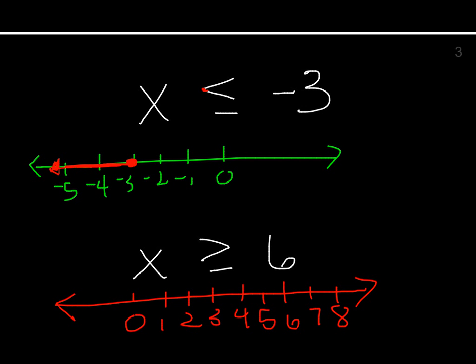We want to show greater than or equal to 6, so since it's or equal to, we fill in the circle. We want to show all the numbers bigger than 6, so we go to the right — 7, 8, 9, and continuing up. Greater than — right. That's the graph of that.